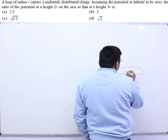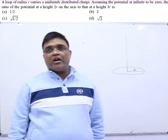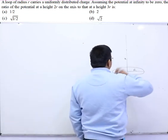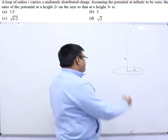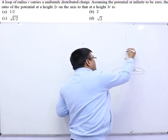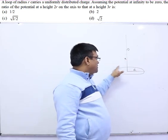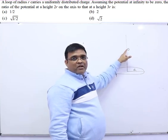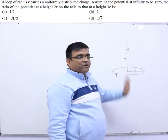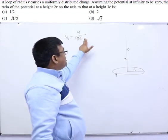We have a ring of radius r, and we are asked to find the ratio of potential at 2r to the potential at 3r. First, let me tell you what is the potential at a distance x. If you have charge q distributed uniformly on the ring, and point O is on the axis, O is equidistant from each and every point on the ring, so the potential due to each charge element is the same at O.